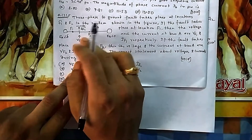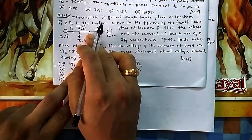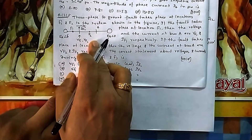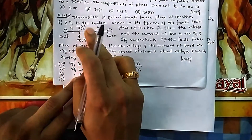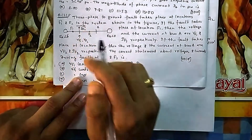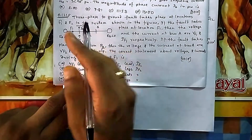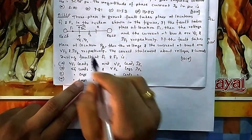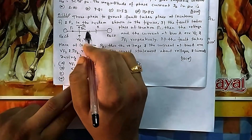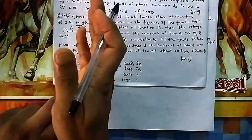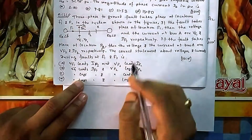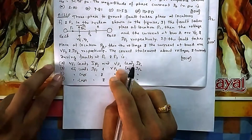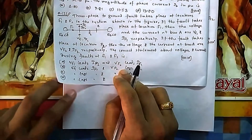If there is a fault at F2, the current will be flowing in a certain direction. So I_F1 will be lagging V_F1, which means V_F2 leads I_F2. Therefore V_F2 leads I_F2 — that corresponds to option A or option C.